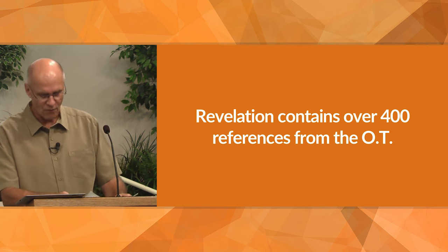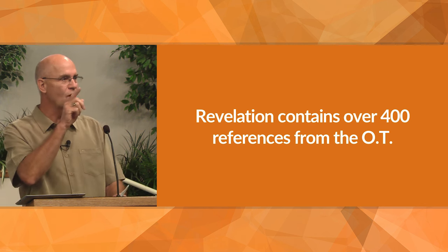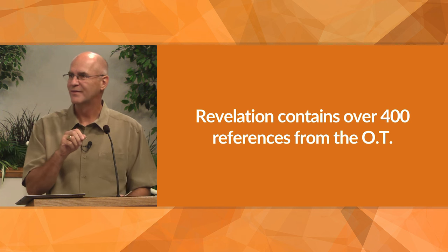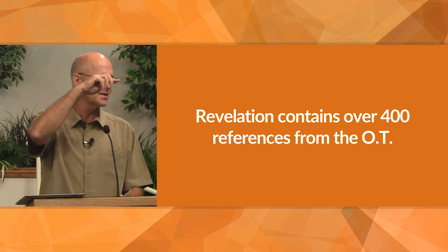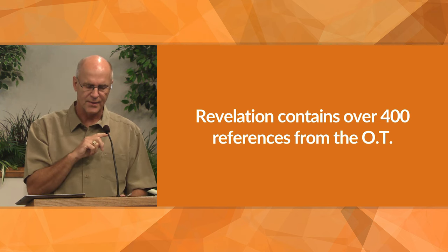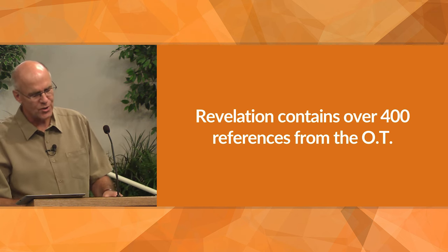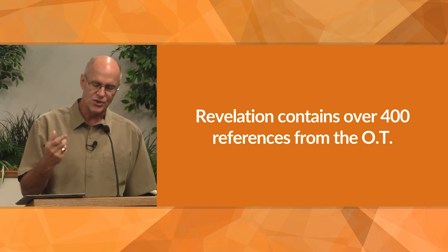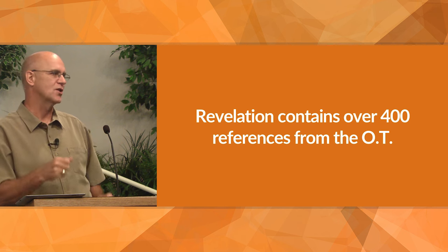There are over 400 references from the Old Testament but there are no direct quotes. Imagine — 400 references in the book of Revelation to the Old Testament to imagery and so on, but no direct quotes from the Old Testament. So we need to examine Jewish symbolism and Jewish numerology in order to get the message behind the images.